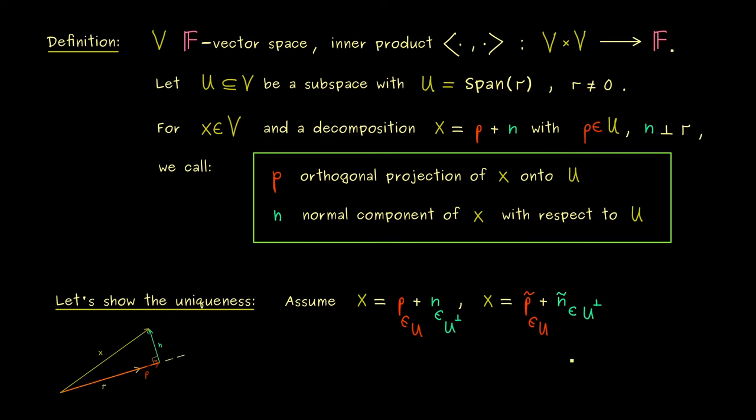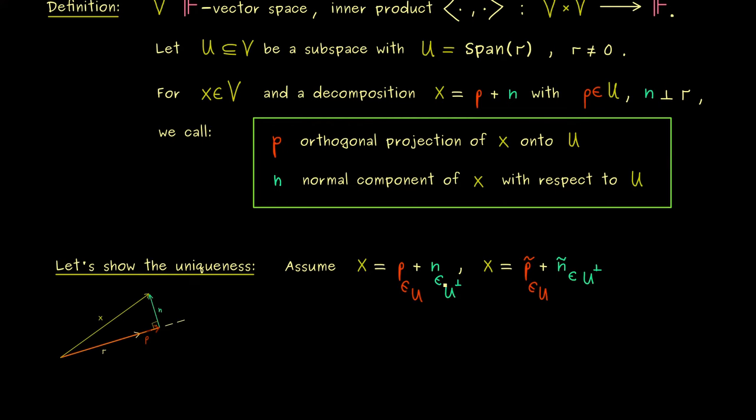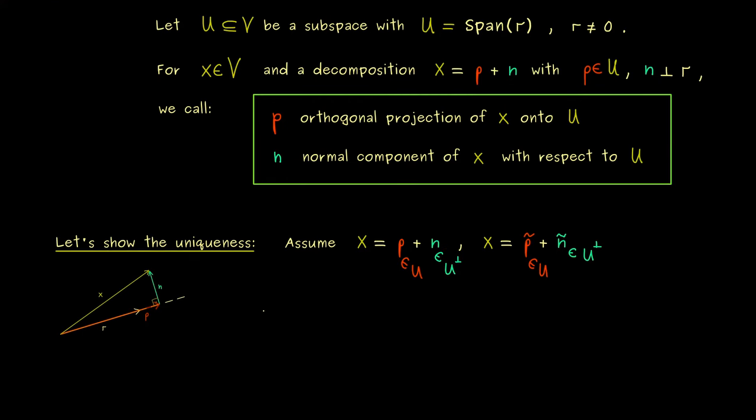Hence please don't forget we still have the two properties of p tilde and n tilde as well, which means p tilde is in U and n tilde is in the orthogonal complement of U. So please recall the definition: the orthogonal complement of U has all the vectors from V that are orthogonal to r. Therefore now we can check if n tilde and n are actually different, and we can examine that by putting x = x, or more precisely what we want is that p + n = p̃ + ñ.